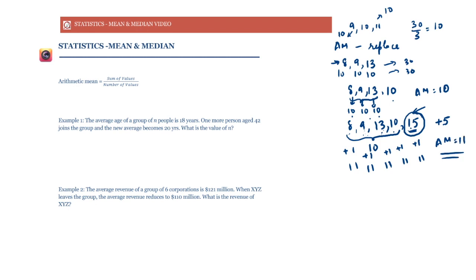We can use the formula — sum of values divided by number of values — to solve questions. But the concept that arithmetic mean is a number that replaces every number without changing the sum is very useful in certain questions. We are able to reduce our calculations by a whole lot.